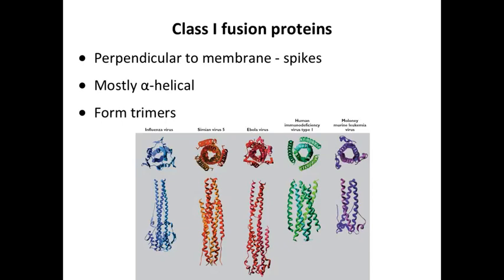This hemagglutinin of influenza virus is very much like the glycoproteins of a few other viruses. SV5, a paramyxovirus. Ebola virus. HIV-1, a retrovirus of mice. These all have these very similar trimeric fusion proteins, which are all shown here in their extended low pH conformation.